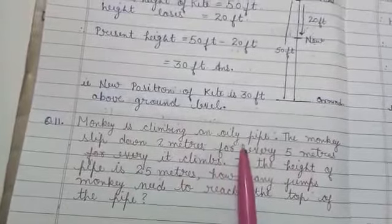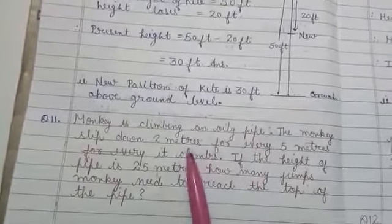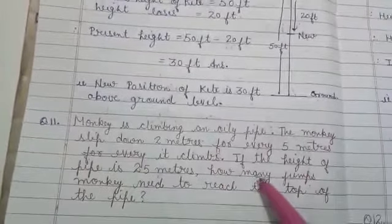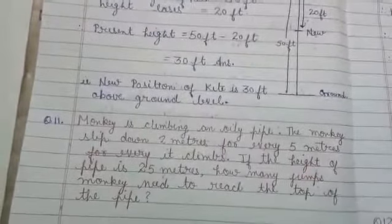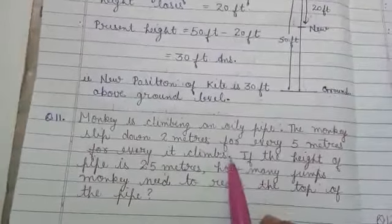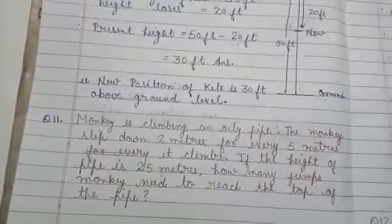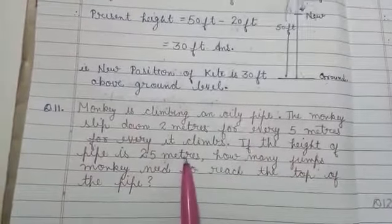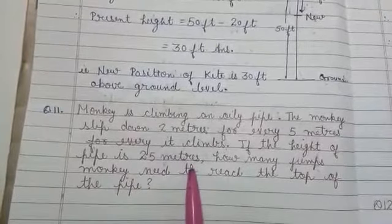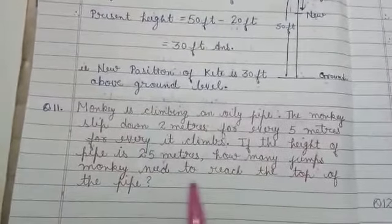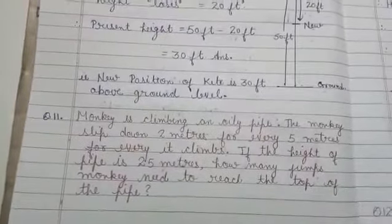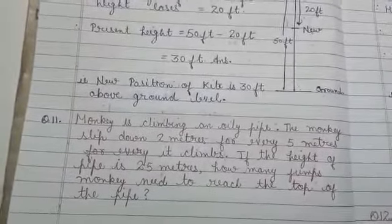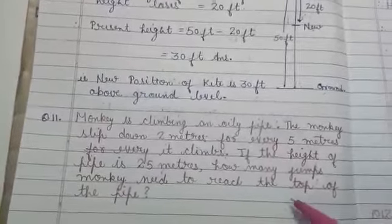Means a monkey which is on an oily pipe. If he goes 5 meters up, then he comes 2 meters down. He climbs 5 meters and slips 2 meters. Means in a jump, he is climbing over only a 3 meter height. Means 5 minus 2 comes 3. Next is: if the height of the pipe is 25 meters, consider how many jumps the monkey needs to reach the top of the pipe. Now he is climbing and he is coming back. Again he is climbing. He is coming back. So how many jumps he has to make to reach on the top of the pipe. This is your question.